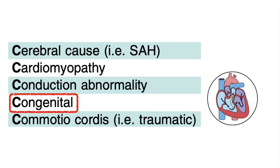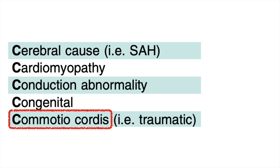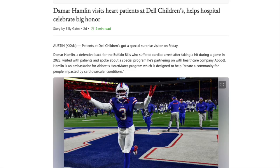Congenital abnormalities — another C — can include structural heart disease, valvular heart disease, and coronary artery anomalies. Sometimes they are known about and corrected through surgery, but in younger patients, their first presentation of a congenital problem might be cardiac arrest. Commotio cordis is one of the commonest causes of sudden cardiac death in young athletes after hypertrophic cardiomyopathy and congenital coronary artery anomalies. It is when a blow to the chest causes a lethal dysrhythmia. A recent high-profile case was American footballer DeMar Hamlin, who happily made a full recovery thanks to immediate resuscitation.